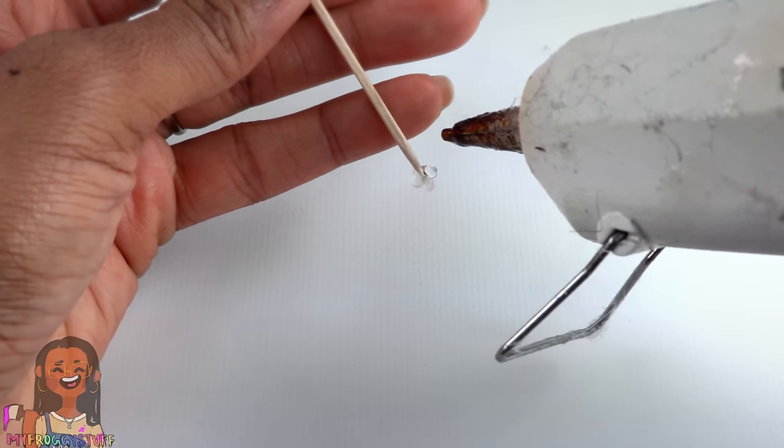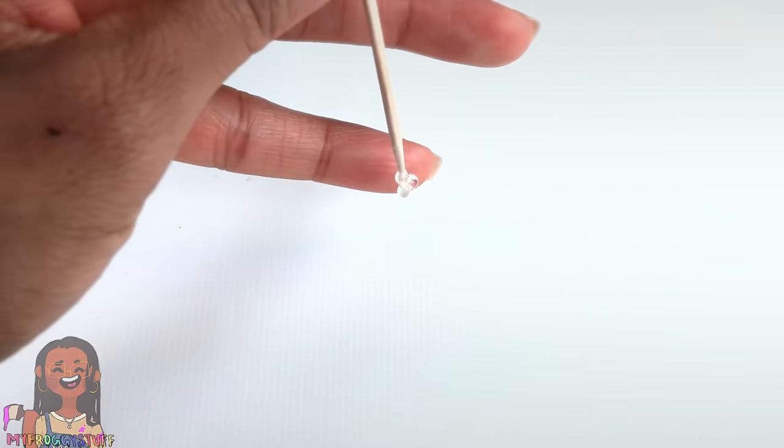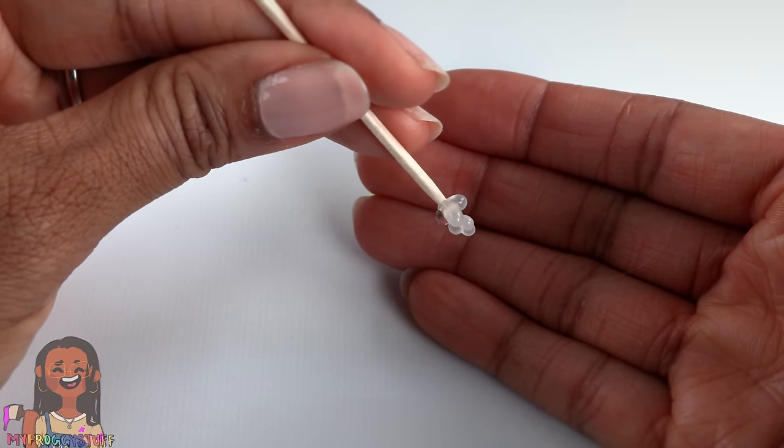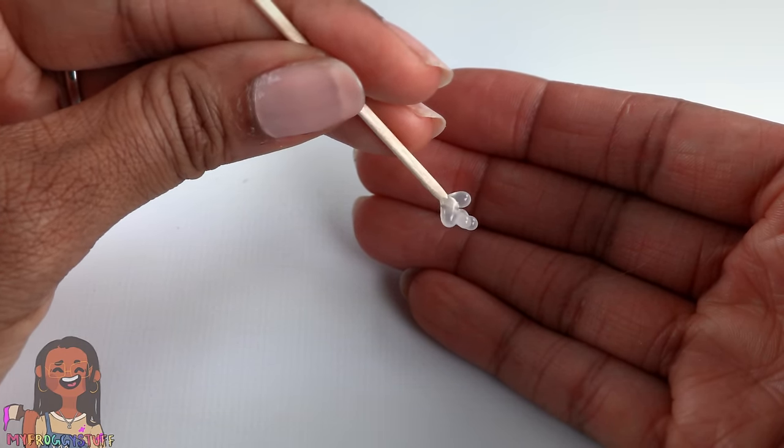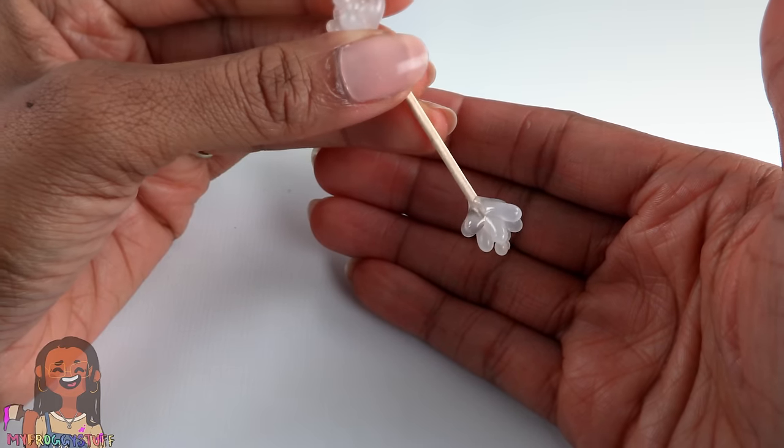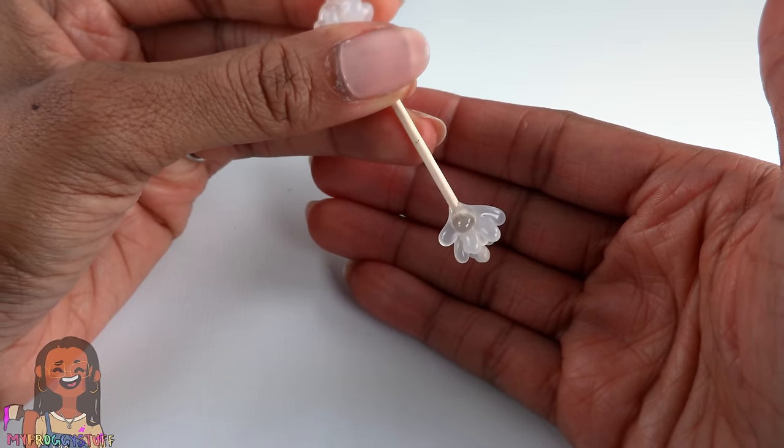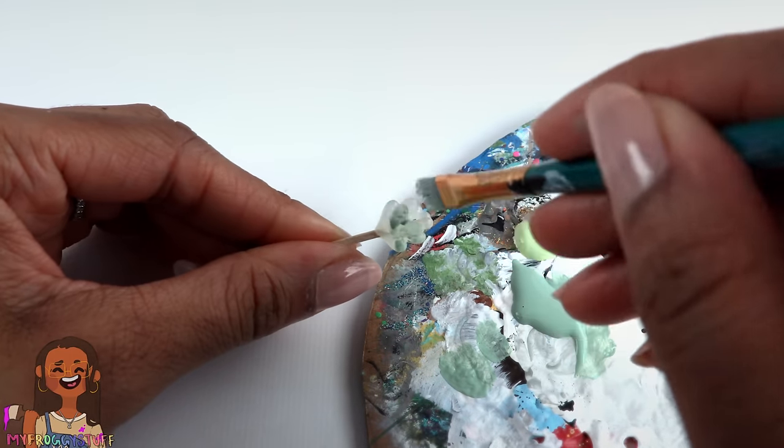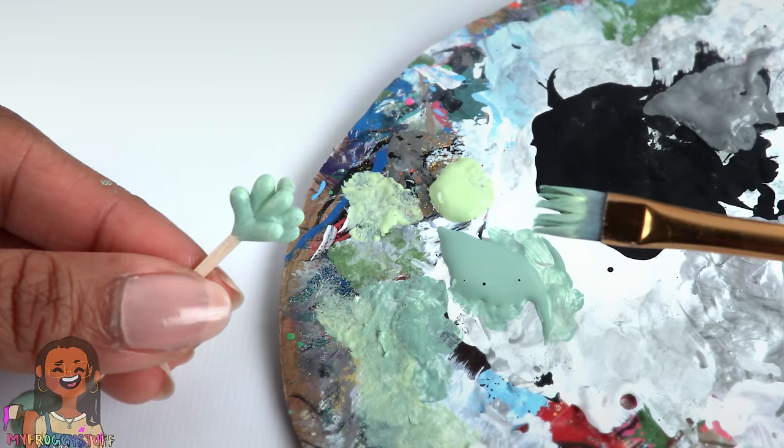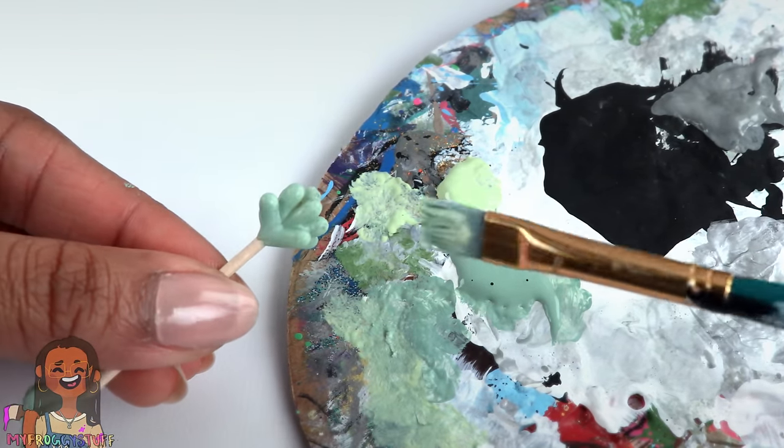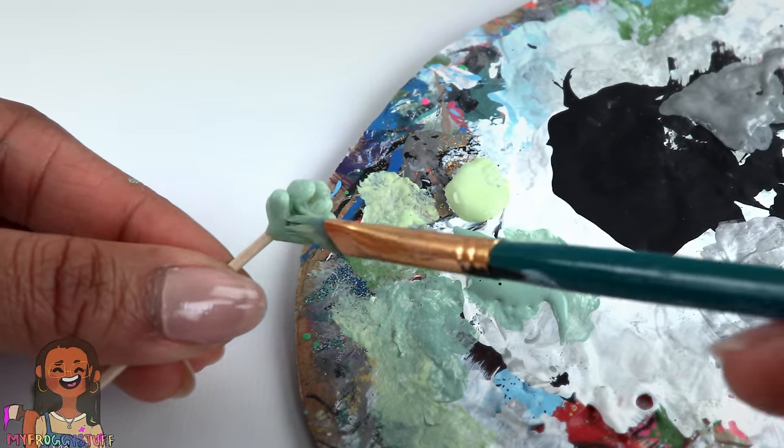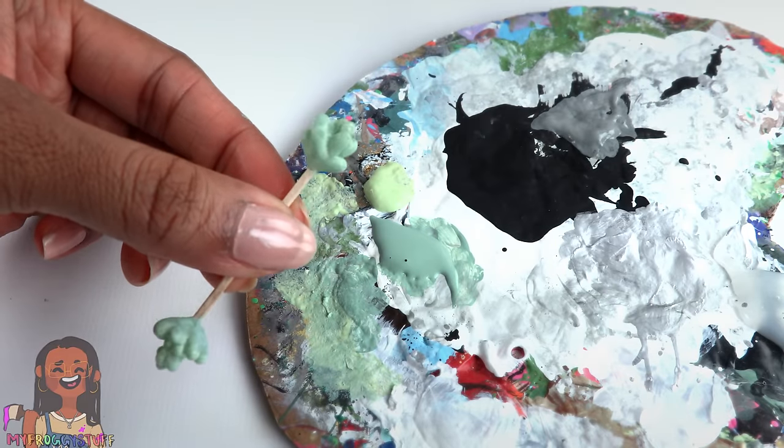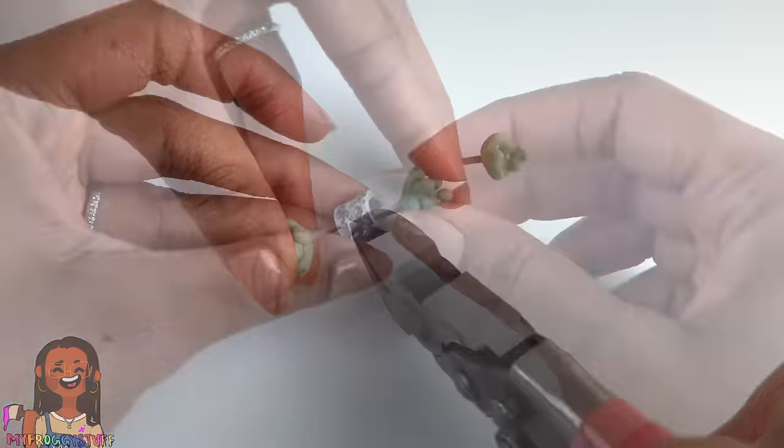Once dried, brush it with some light green paint. The colors I'm using are called sage and celery. First I went over with sage, now I'm just kind of tapping it with the celery. Allow it to dry. Cut the toothpick, glue it into a paper tube to make a moonstone succulent.